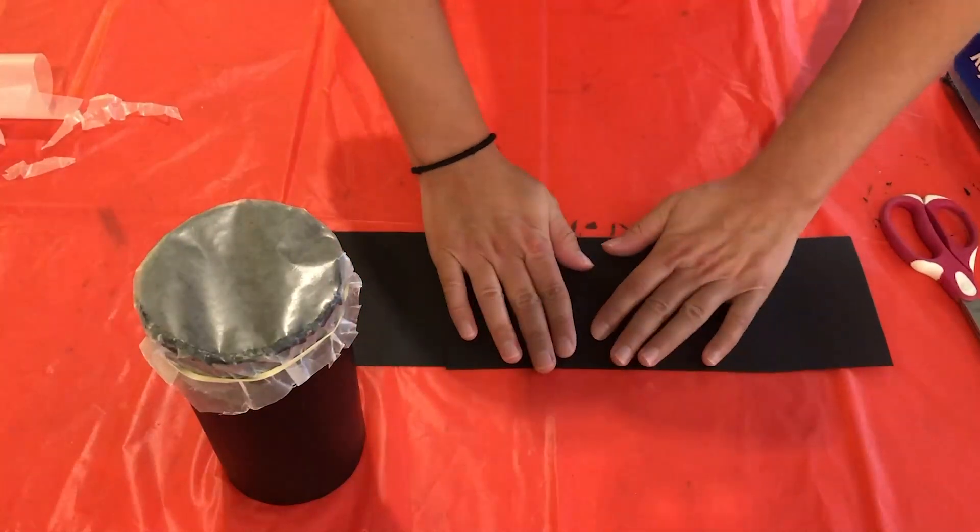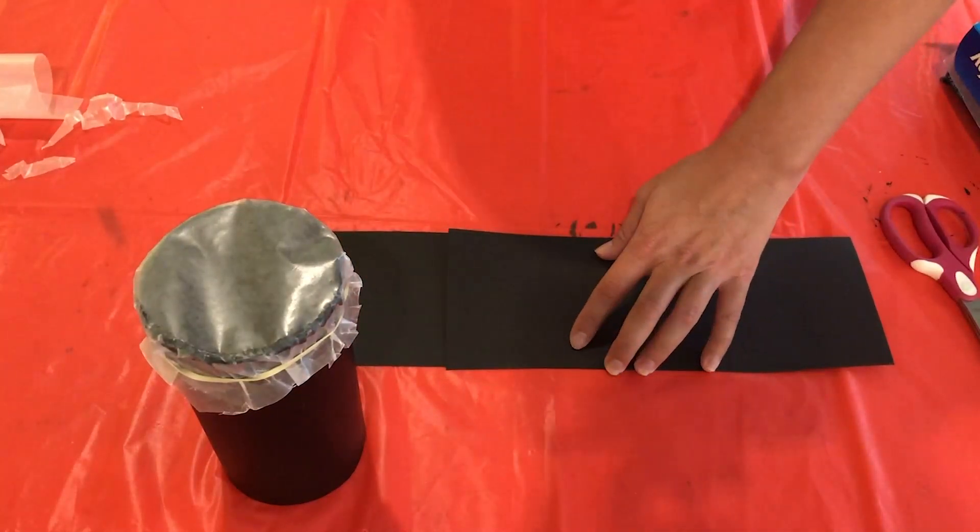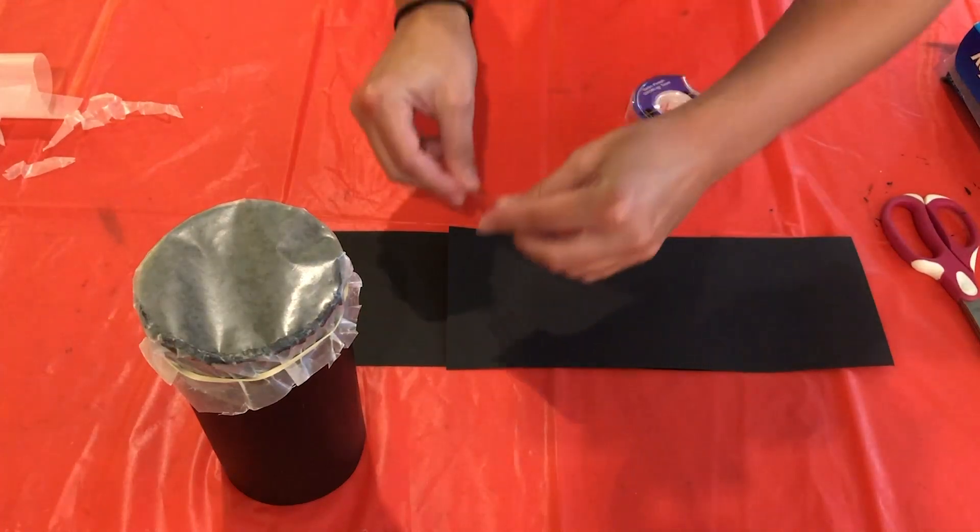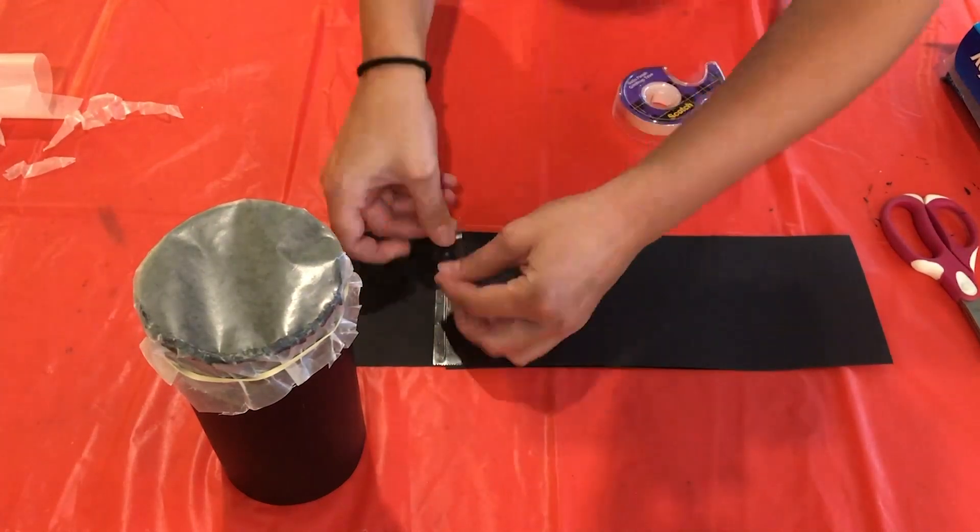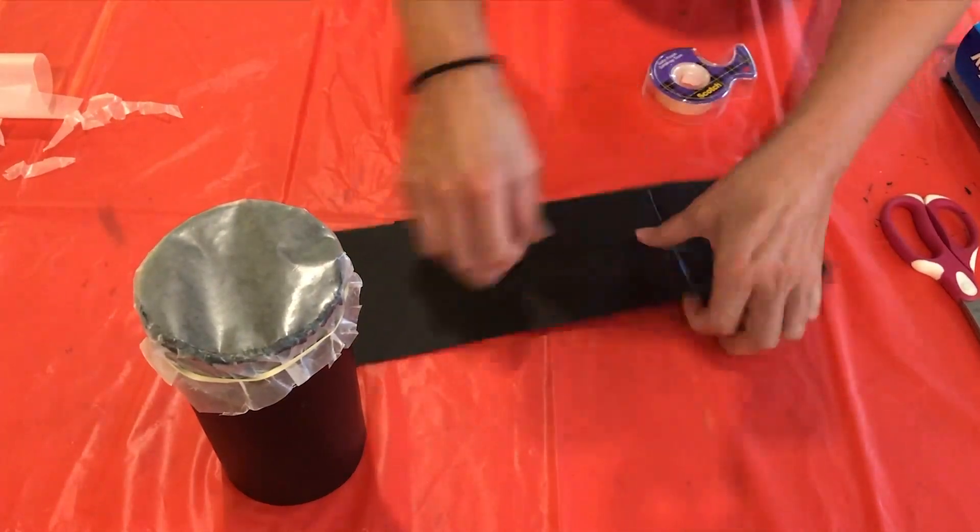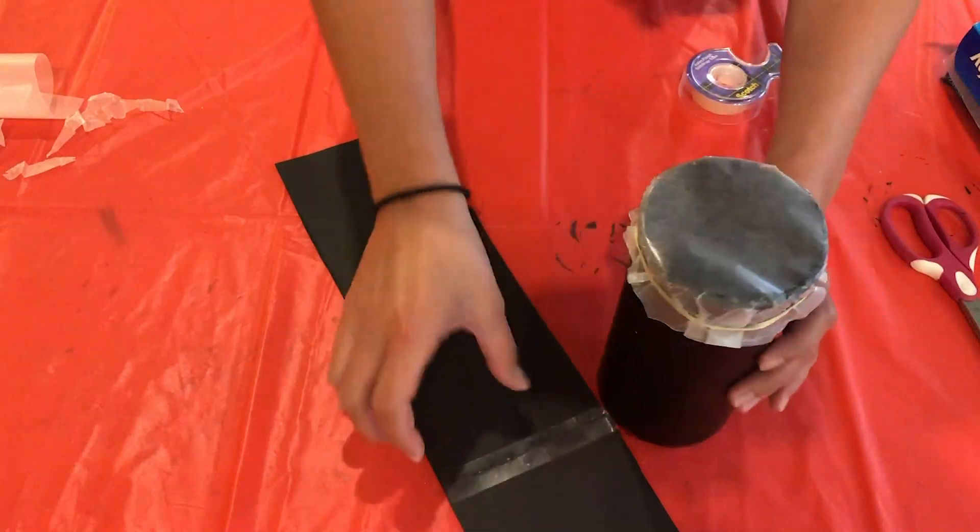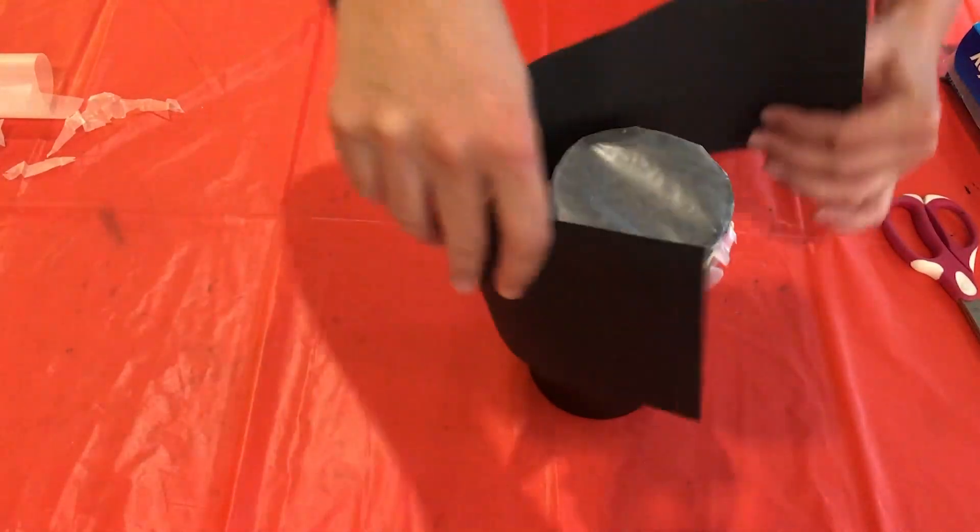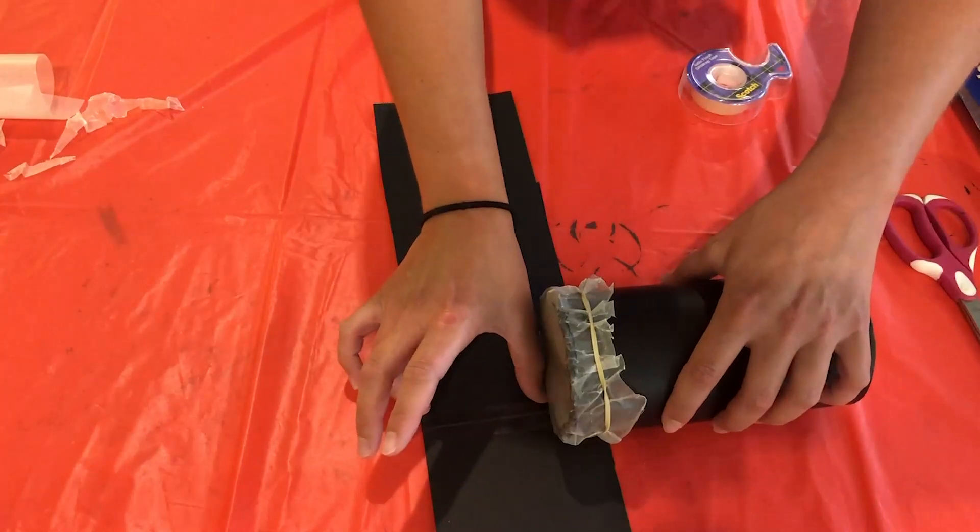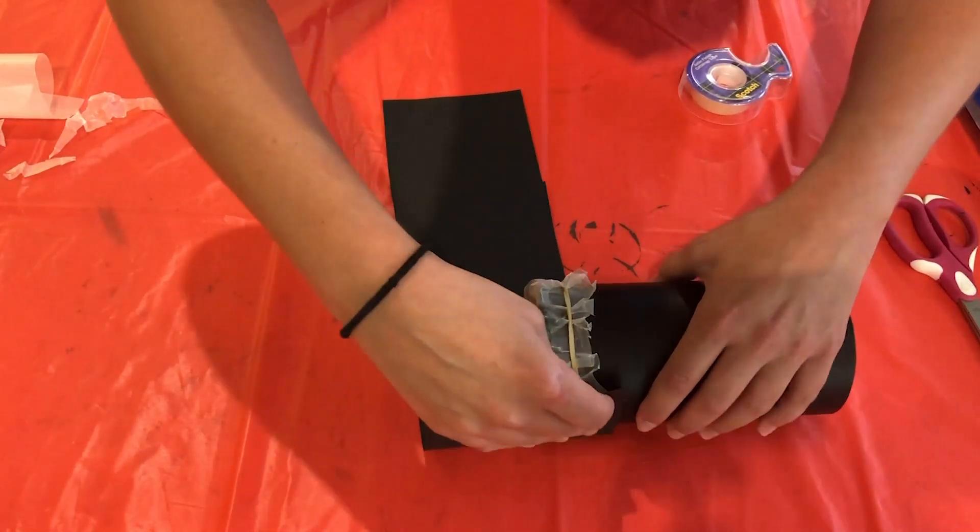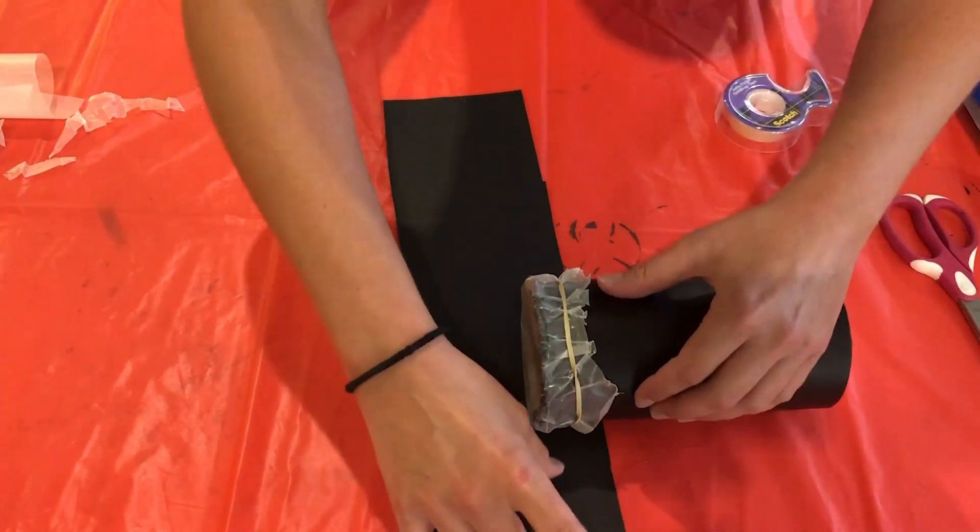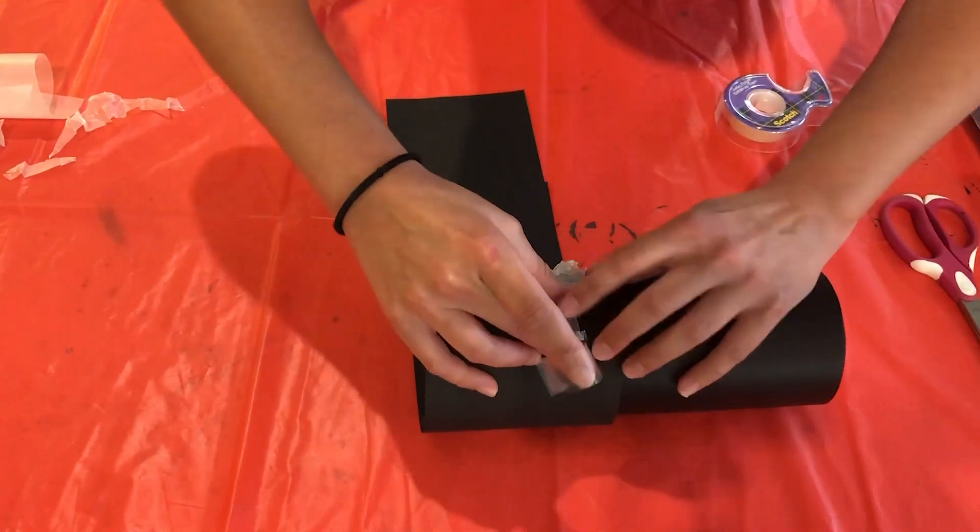All right, so what we're going to do now is we are going to put these together. Just want to make sure that it fits around your container. So I'm going to get my tape and I'm going to tape these together here, go ahead and tape the other side. All right, so next we are going to wrap this around the container. You want to leave space here - this is going to help when you're viewing the pinhole camera, it'll keep some of the light out. So let's go ahead and tape this down.